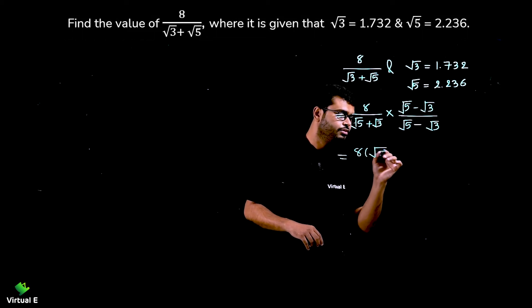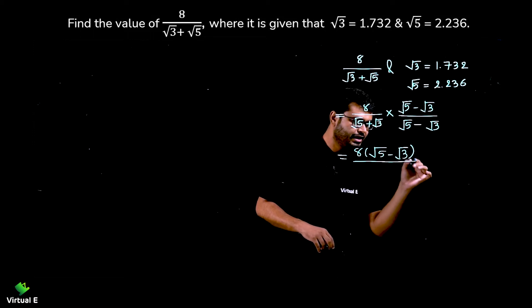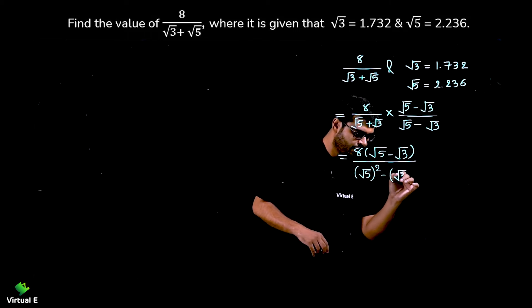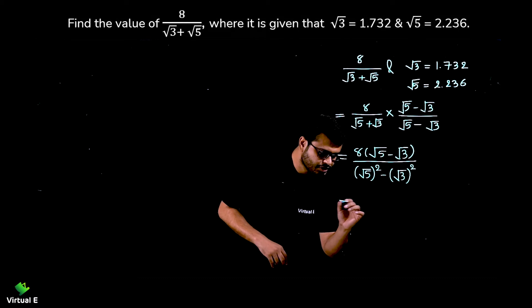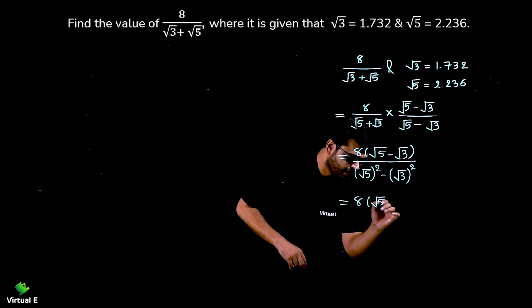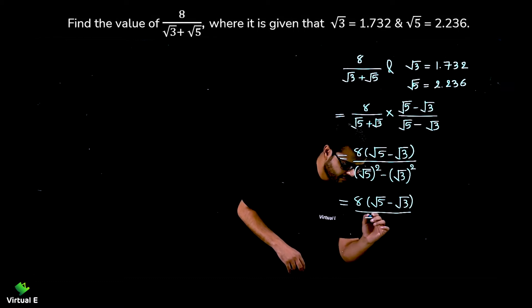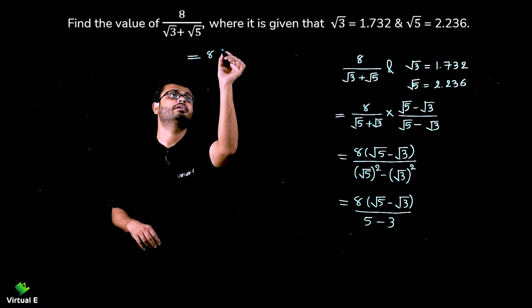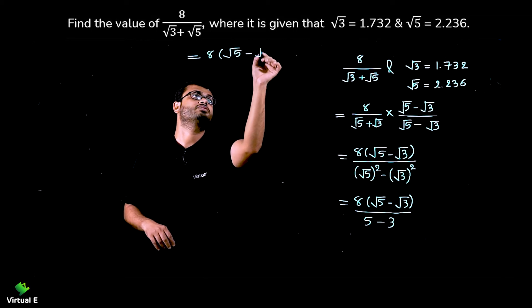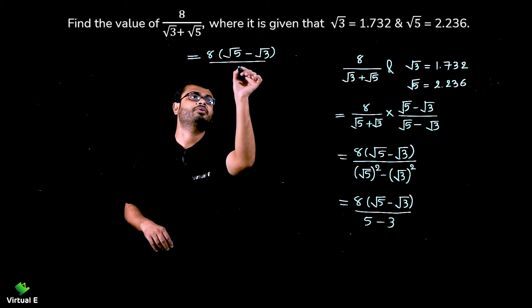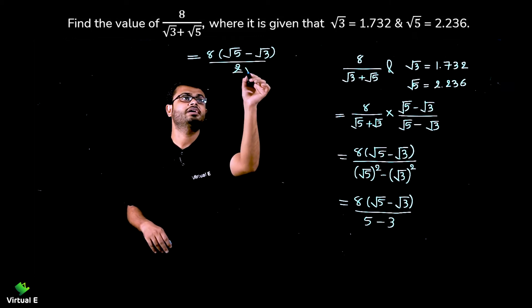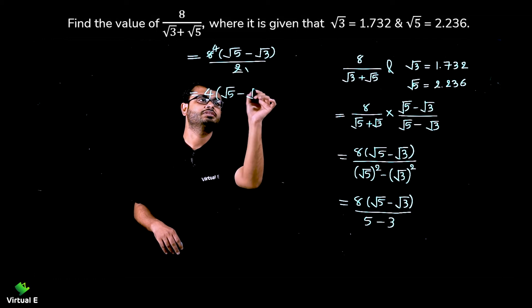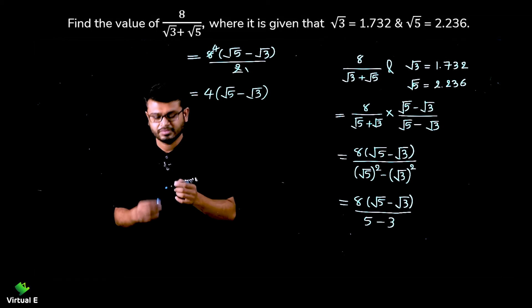Multiplying 8 into (root 5 minus root 3) in the numerator, and in the denominator we use the identity: (root 5)² minus (root 3)², which gives 5 minus 3 equals 2. So we get 8 times (root 5 minus root 3) over 2, which simplifies to 4 times (root 5 minus root 3).